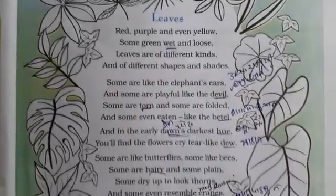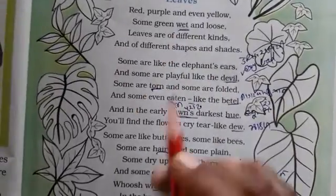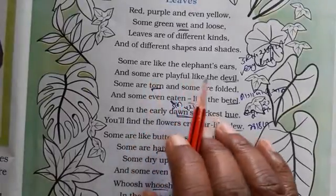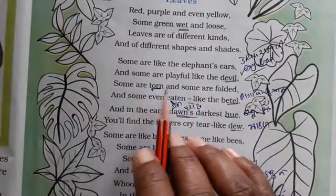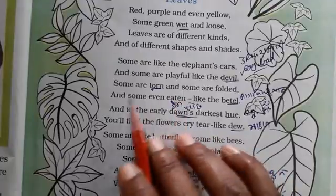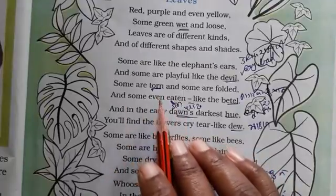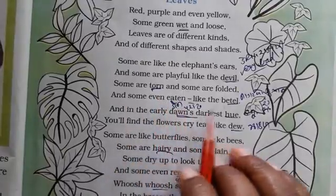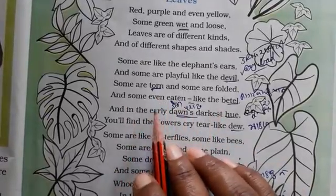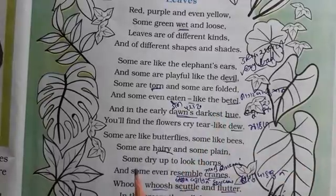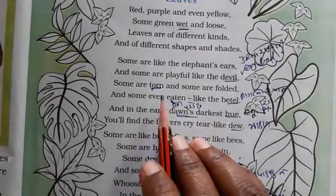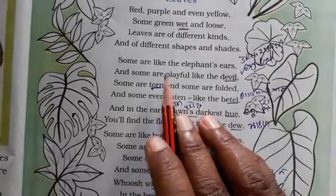So, moving to the next point — some leaves are like the elephant's ears, some are playful like the devil. Some are torn and some are folded. Some are even eaten like a beetle.